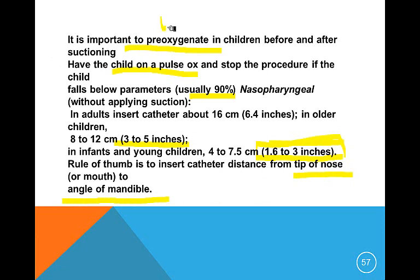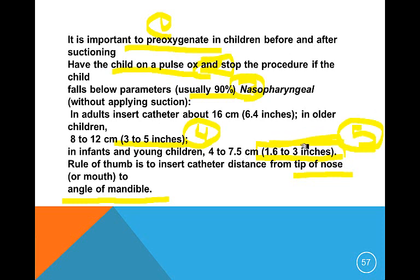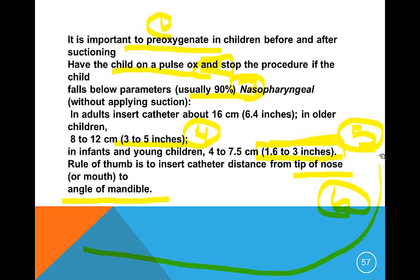Pre-oxygenate — number one. Have them on a pulse ox — number two. Stop if it gets to 90% — number three. For older children, 3 to 5 inches — number four. For a younger child, 1.6 to 3 inches — number five. Rule of thumb is tip of the nose to the angle of the mandible — number six. Those are your six rules for suctioning.